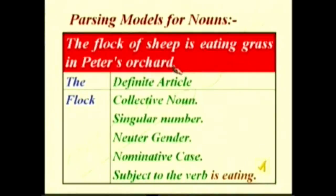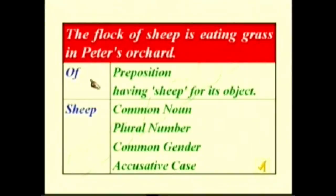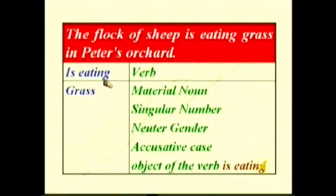'The flock of sheep is eating.' 'Of' — preposition, having 'sheep' for its object. 'Sheep' — common noun, plural number, common gender, accusative case. 'Is eating' — verb, present continuous tense. 'Grass' — material noun, singular number, neuter gender, accusative case, object of the verb 'is eating.'